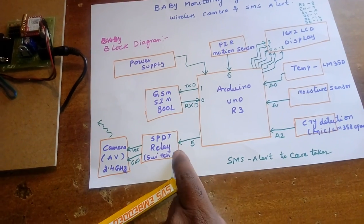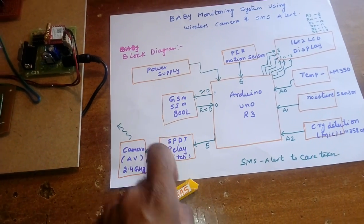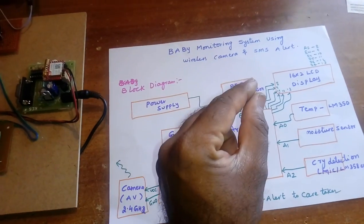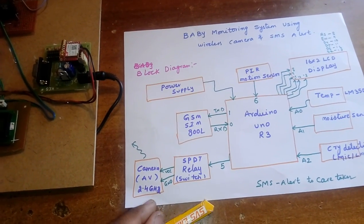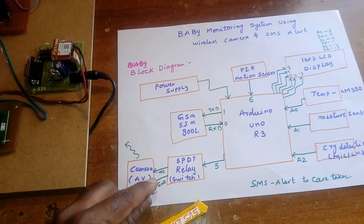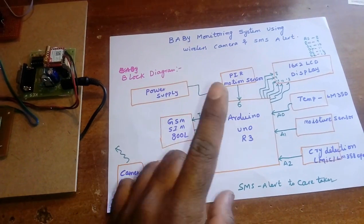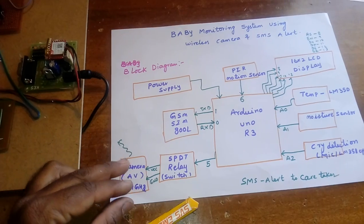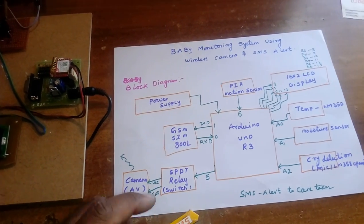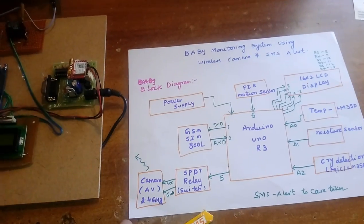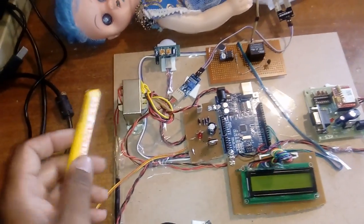We are using an SPDT relay. If the PIR is detected, the camera is switched on. If PIR is not detected, we stop the ground connection and the camera stops. If detected, the camera is connected to ground with positive and negative supply, and the camera starts. Now let's look at the hardware.